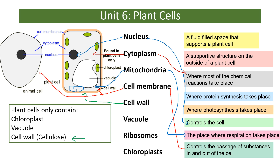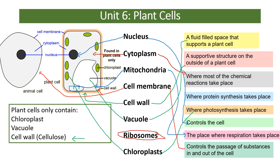The cell wall is made out of cellulose and is involved in giving the cell a supportive structure around the outside, maintaining its shape. The vacuole, found in plant cells only, is a fluid-filled sac that supports the plant cell and keeps it turgid. Chloroplasts are the green parts that carry out photosynthesis and are only in plant cells found above the ground — so they wouldn't be in root hair cells.